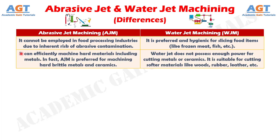Difference number 8: abrasive jet machining can efficiently machine hard materials including metals. In fact, abrasive jet machining is preferred for machining hard brittle metals and ceramics, whereas in water jet machining, the water jet does not possess enough power for cutting metals or ceramics. It is suitable for cutting softer materials like wood, rubber, leather, etc.